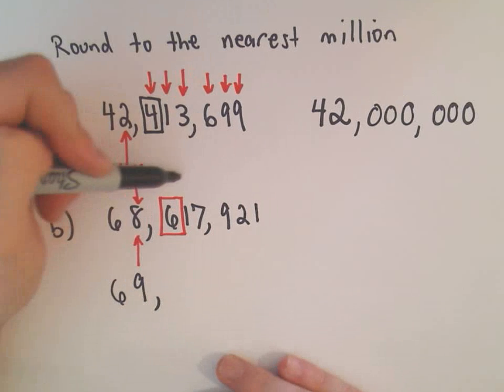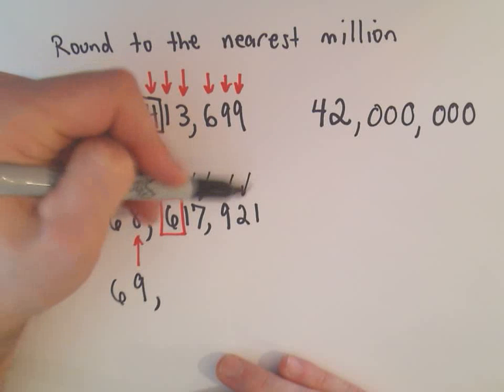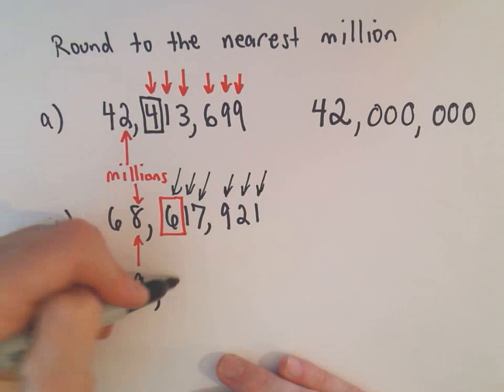And then again, same thing as before. We just simply turn every digit to the right into zeros.